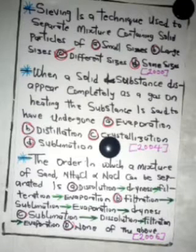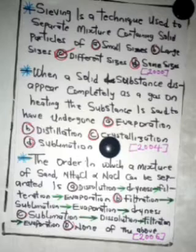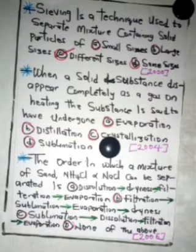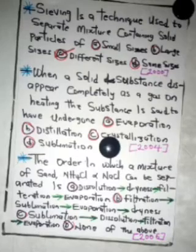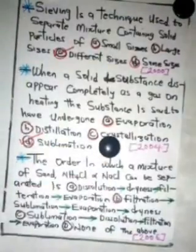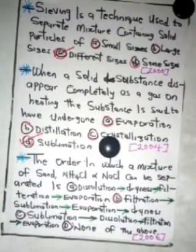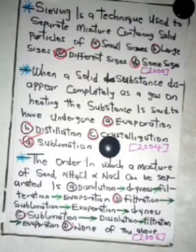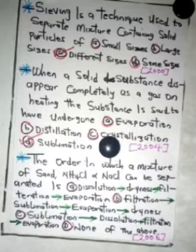The next question: when a solid substance disappears completely as a gas on heating, the substance is said to have undergone — the answer is sublimation. Sublimation is a change of state from solid to gas without passing through the liquid phase.